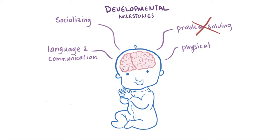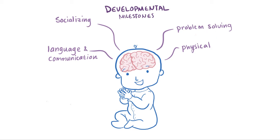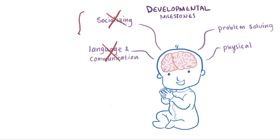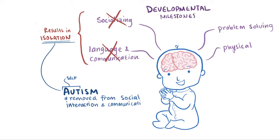If one of these doesn't develop as scheduled, depending on the severity, it may be described as a type of neurodevelopmental disorder — neuro referring to the brain. Especially when certain skills related to socializing and communicating don't proceed as normally, it can result in isolation, which is where the name autism originated, since auto means self. So autism refers to a condition where somebody might be removed from social interaction and communication, leaving them alone or isolated.